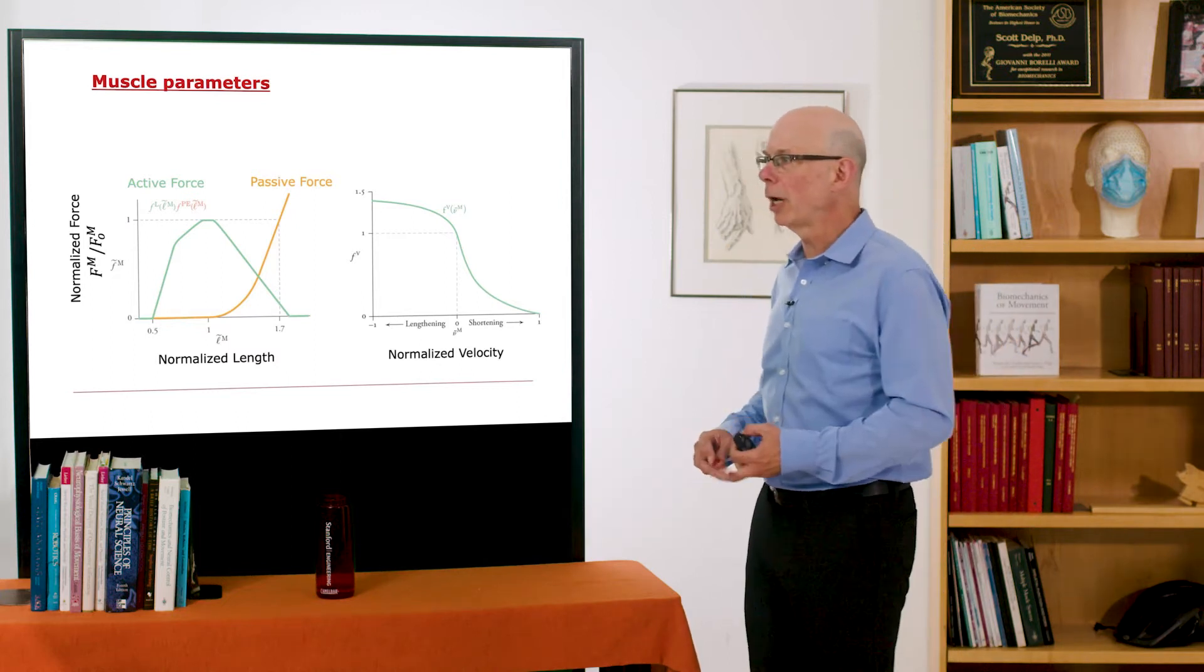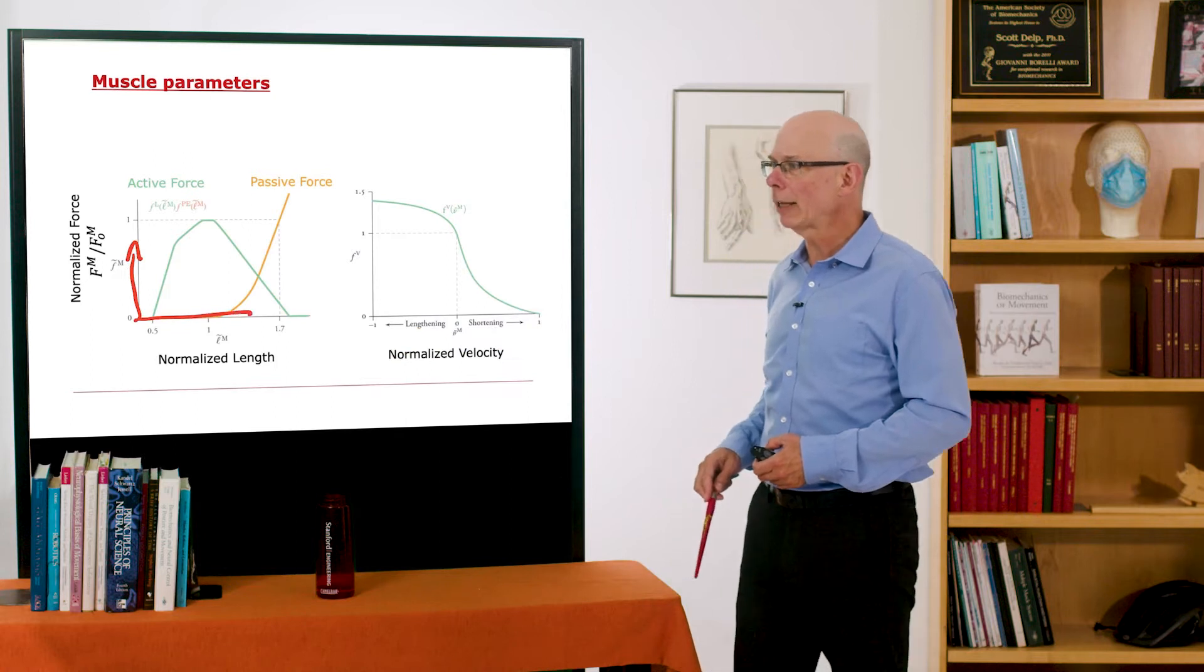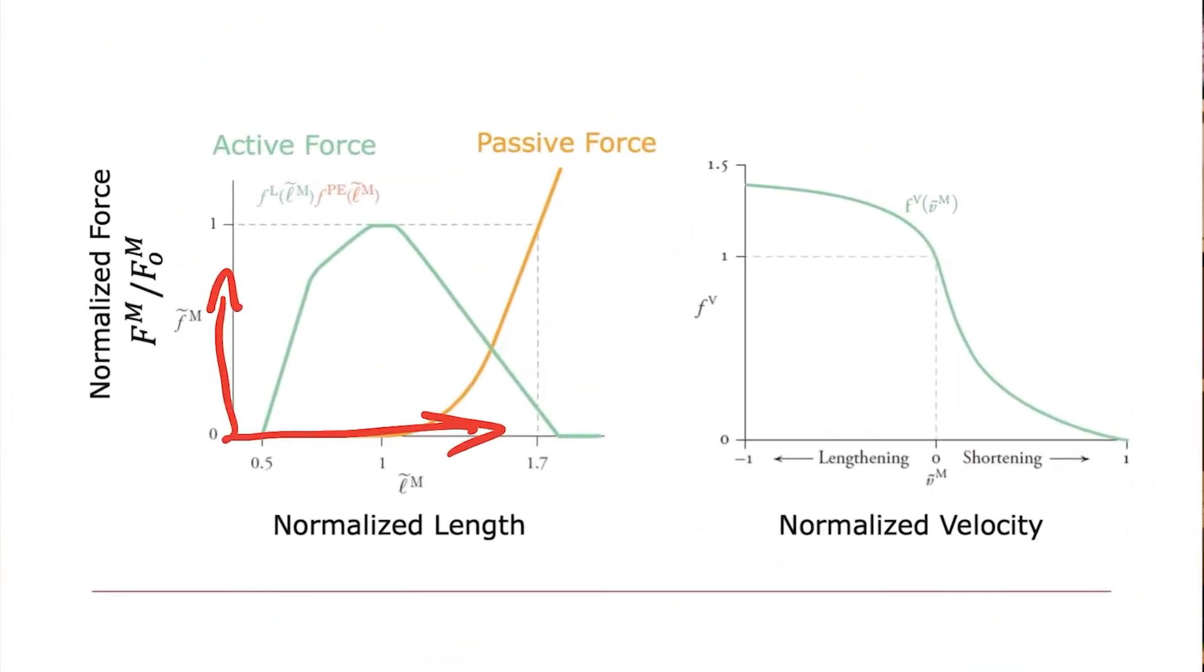So just some engineering terminology. What I have here is normalized force versus normalized length, and we have some parameters for active force and for passive force as well as the force velocity property of muscle.